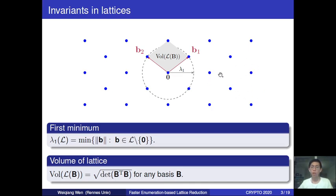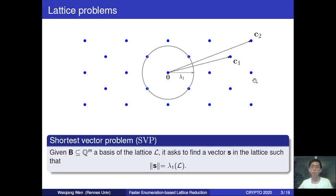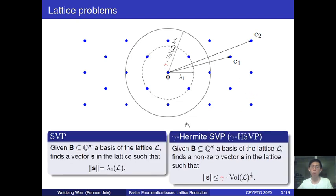One of the most important problems defined on lattices is known as the shortest vector problem. We are given a basis of the lattice and asked to find a shortest vector with norm equal to the first minimum. In this work, we consider a variant called approximate Hermit SVP. Again you are given a basis, but now you are asked to find a shortest vector with norm upper bounded by the normalized volume of the lattice up to some factor gamma.